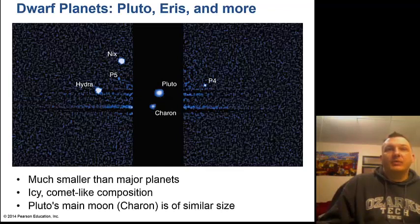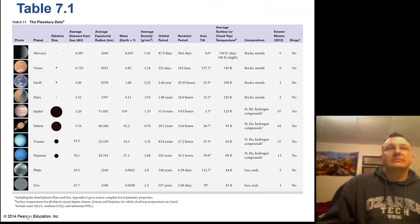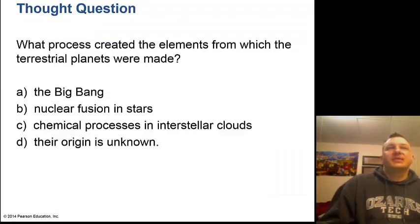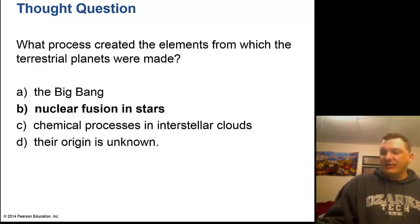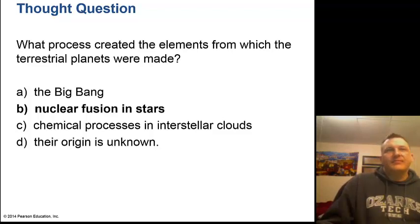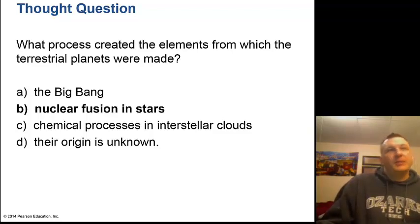The dwarf planets — Pluto, Eris, and others — are much smaller than the major planets with icy, comet-like compositions. Pluto's main moon Charon is of a similar size to Pluto. A table of all planetary facts is in your book. What process created the elements in the terrestrial planets? It's nuclear fusion in stars. The universe is made of hydrogen and helium, but everything else — the iron in your blood, the calcium in your bones — comes from nuclear fusion in stars, spread through the universe by supernova explosions. We are made of stardust.